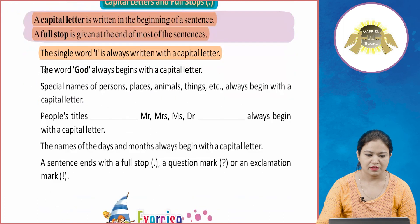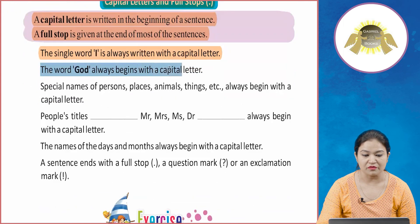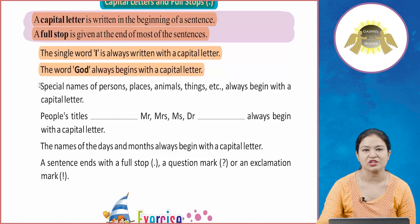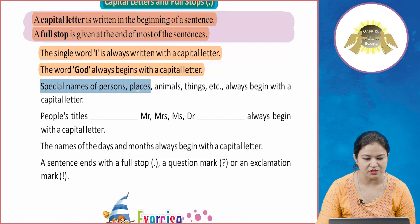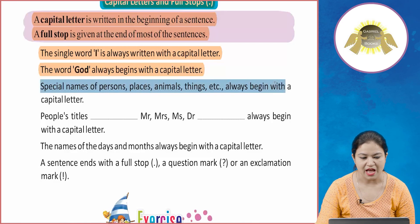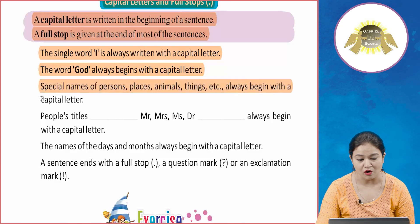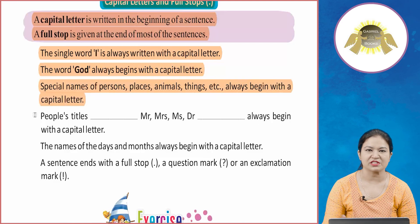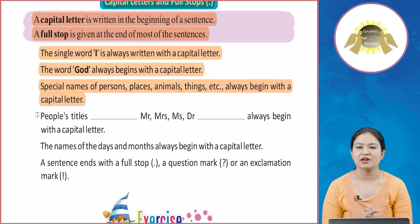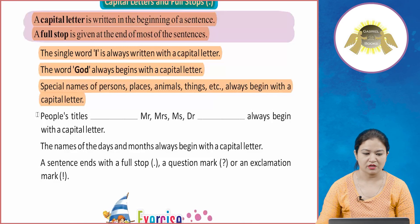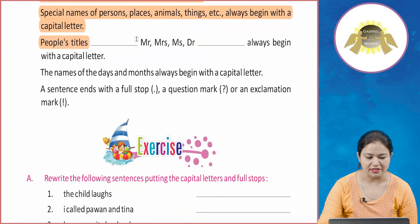The word 'God' always begins with a capital letter. Special names of persons, places, animals, and things always begin with a capital letter. Any special name of a person, a place, or an animal always starts with a capital letter.